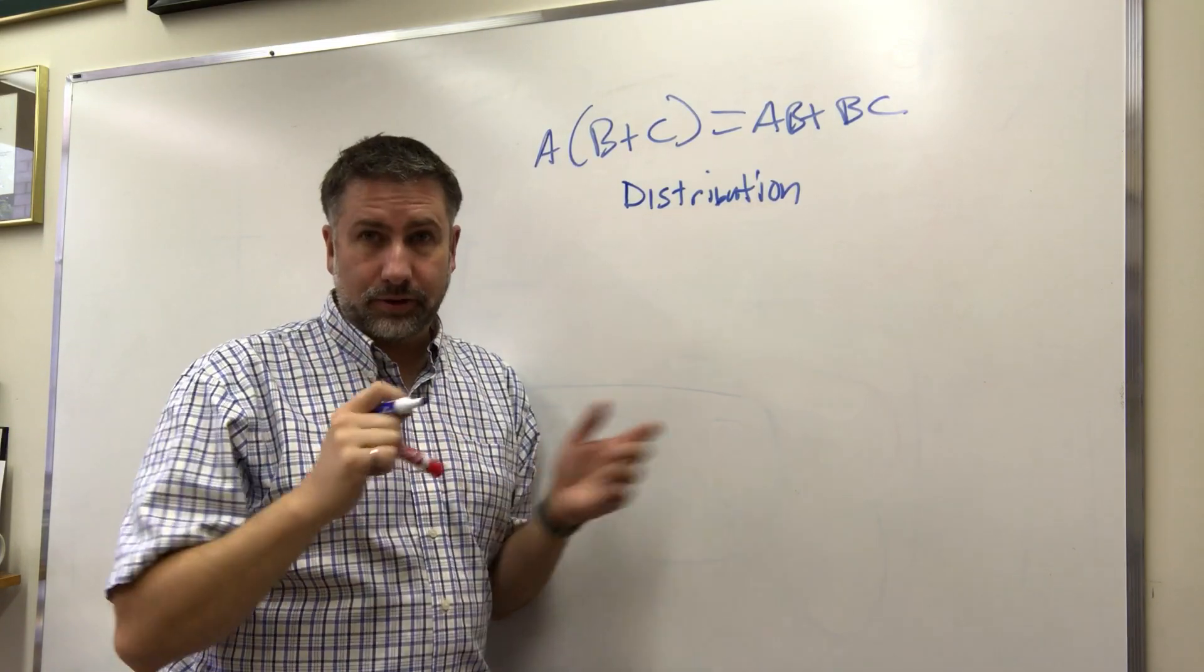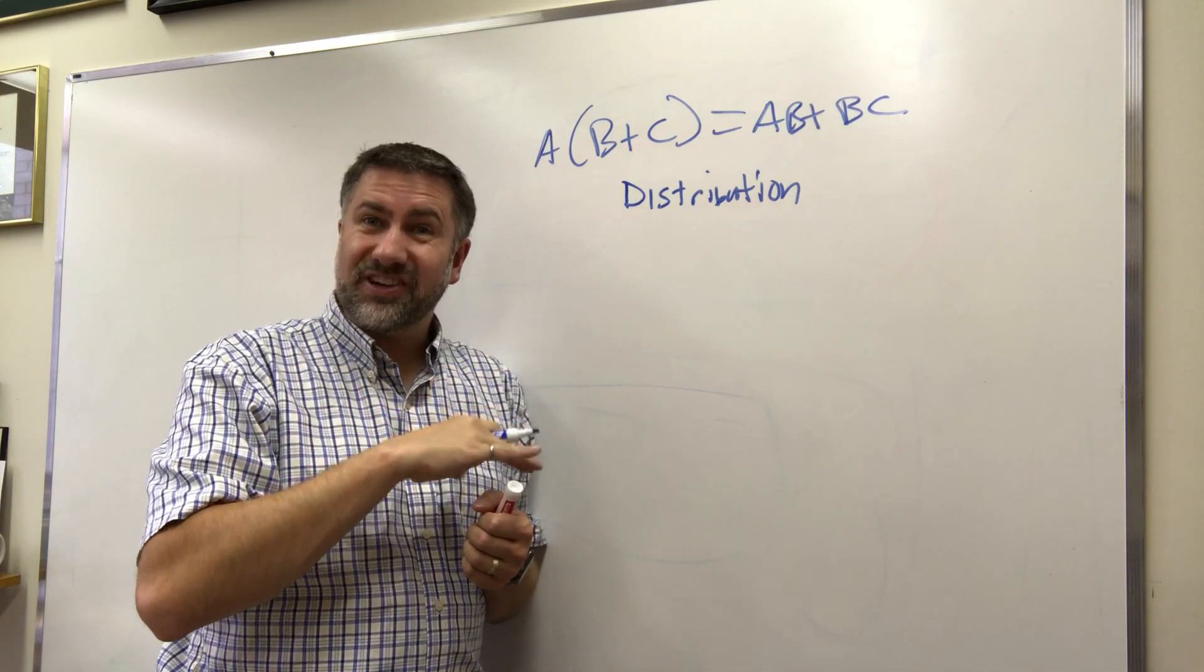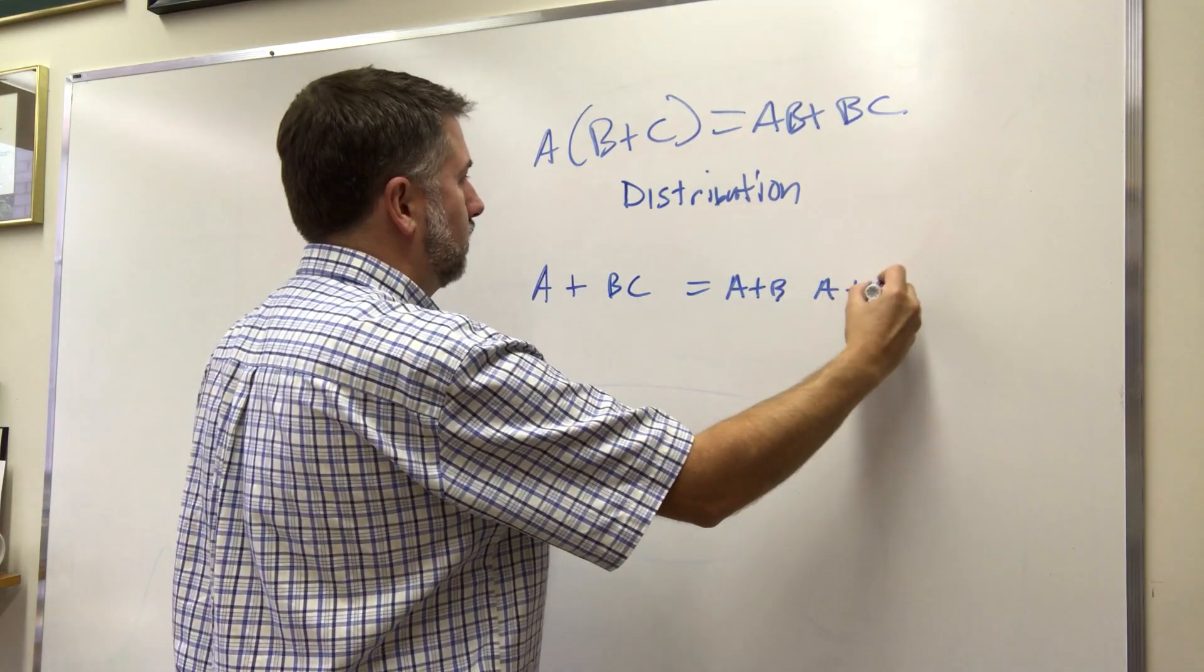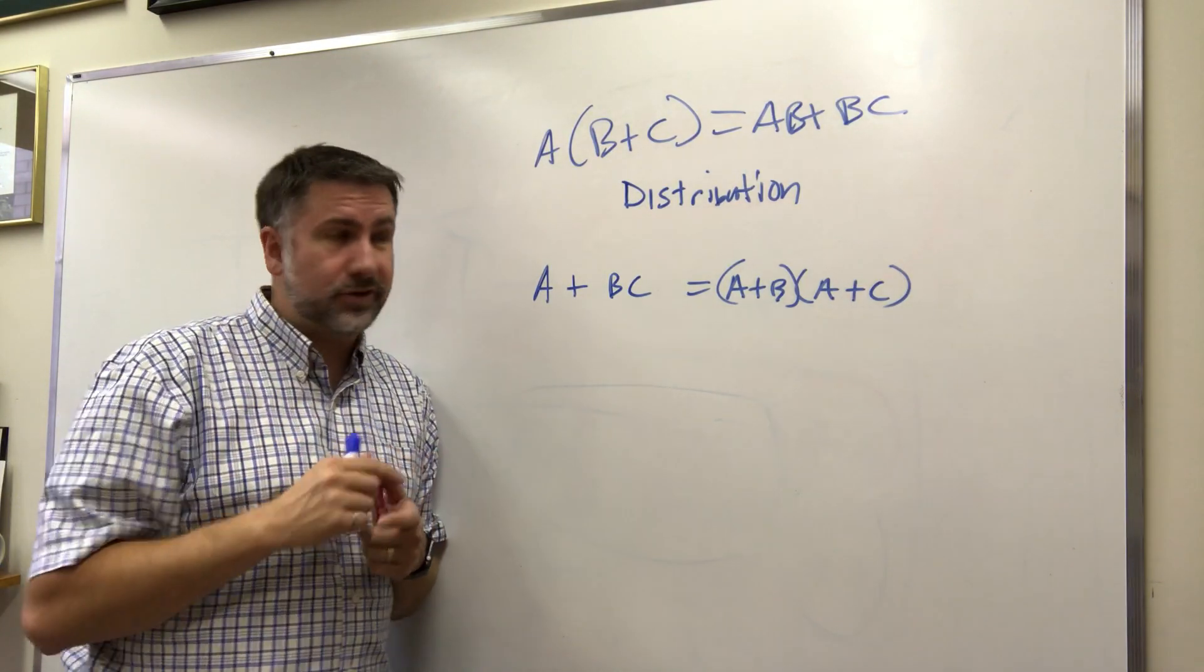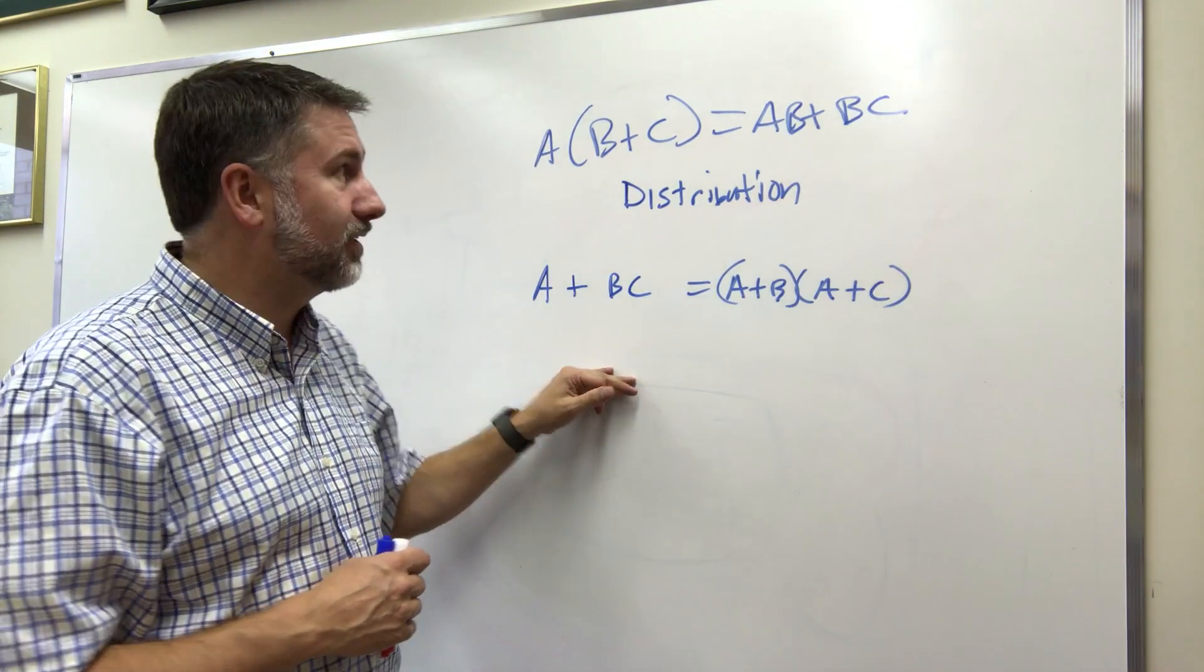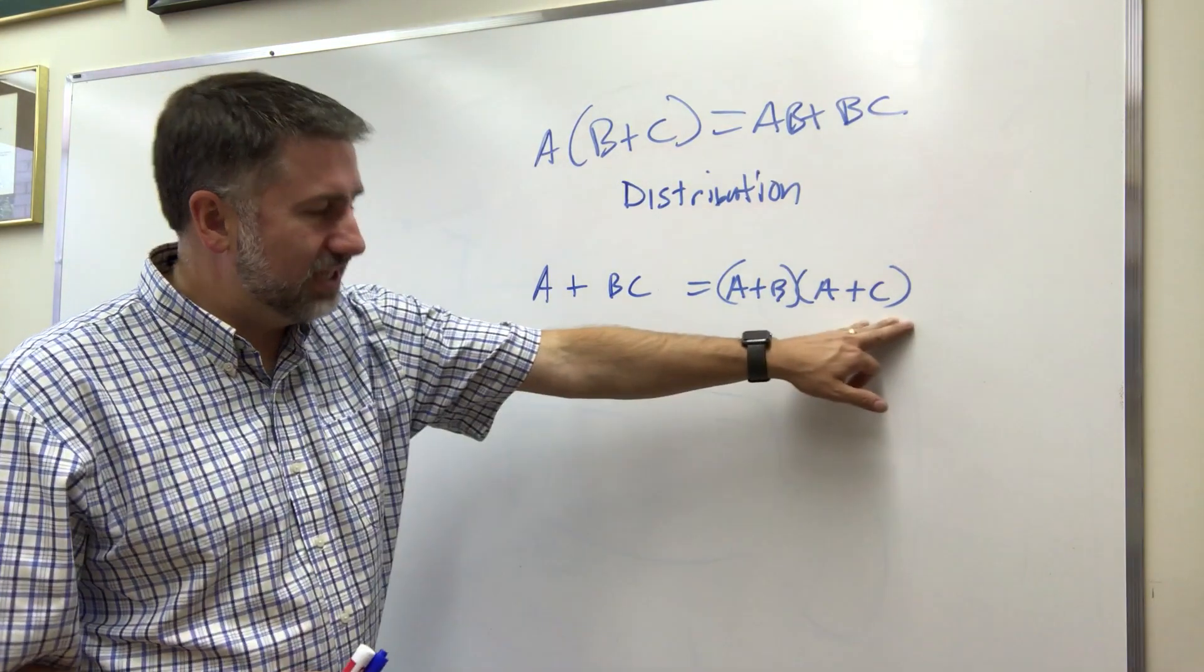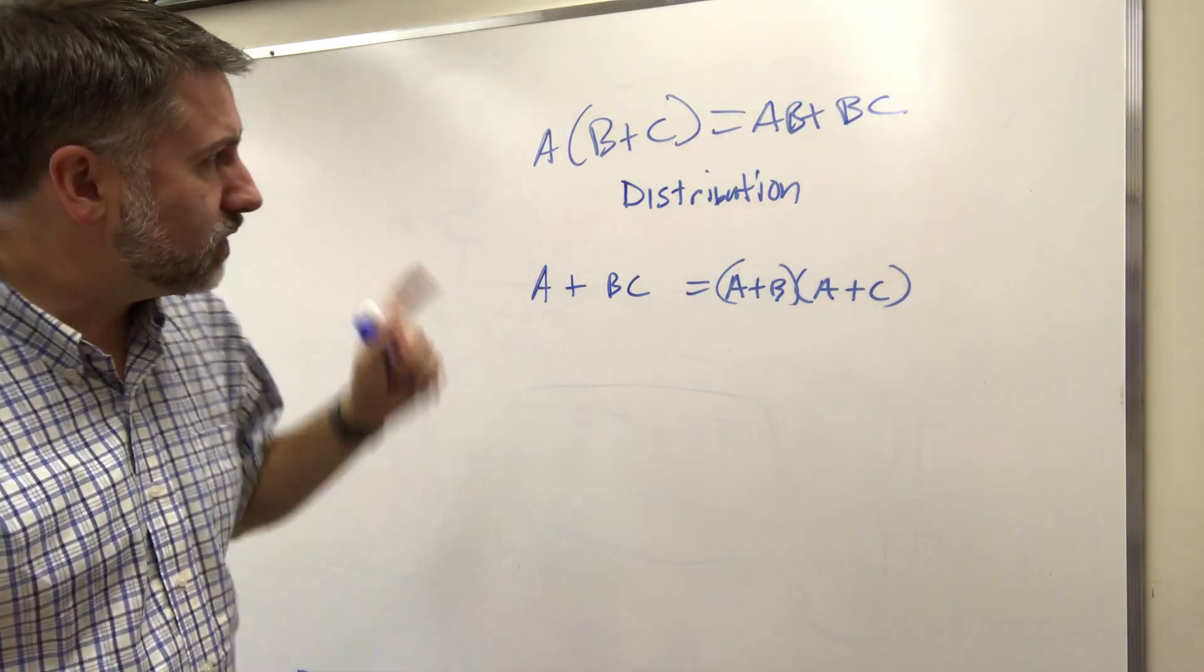We can prove this to ourselves later on using some of the techniques that we have already seen. The truth table comparison technique. We can also prove that later on with some other techniques that we'll see. But for now, this is distribution. Now, a really interesting thing that I'll show you and then we can prove later is that distribution works in binary logic and Boolean logic in both directions. Which means, A plus BC equals A plus B times A plus C. That looks really strange and it should look strange because it's not correct in traditional algebra. But in Boolean algebra, it is correct and we can prove how that's the case.